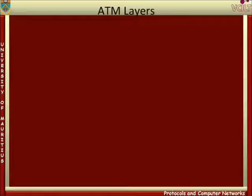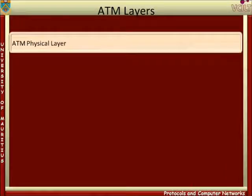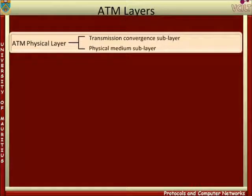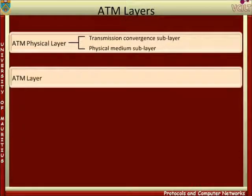A review of the ATM layers will be briefly described. The ATM physical layer is divided into two sub-layers: the transmission convergence sub-layer and the physical medium sub-layer. Functions of the transmission convergence sub-layer include generating and receiving cells, and generating and verifying the cyclic redundancy check in the header error control field. The functions of the ATM physical medium sub-layer are associated with the transmission of bits over a specific physical medium. The primary functions of the ATM layer are associated with the routing and switching of ATM cells.